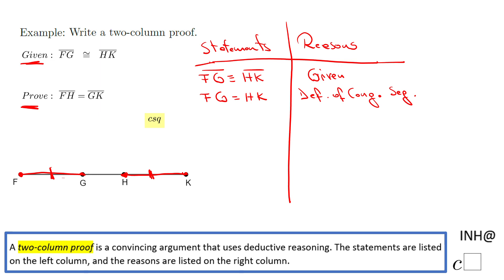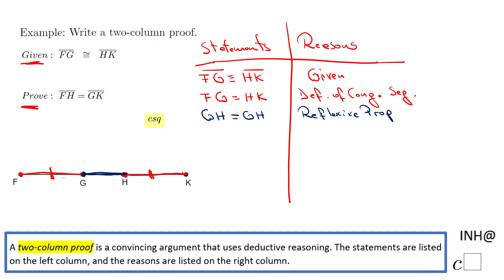Then, what I'm going to do is take segment GH — the one right here in the middle. I'm going to say GH equals itself: GH equals GH. Whenever you have something equal to itself, that is the reflexive property — in this case, the reflexive property of equality.